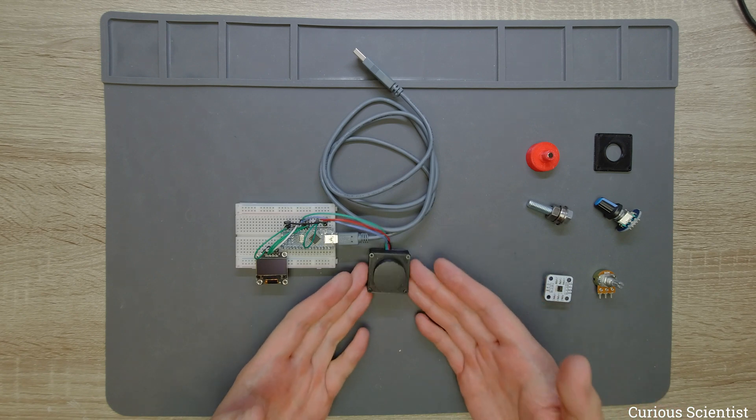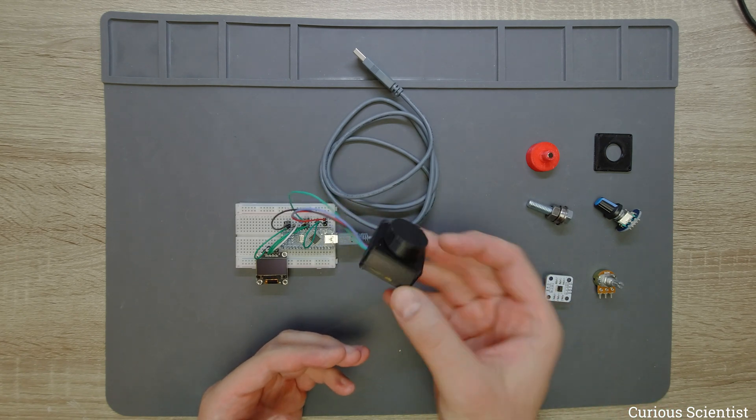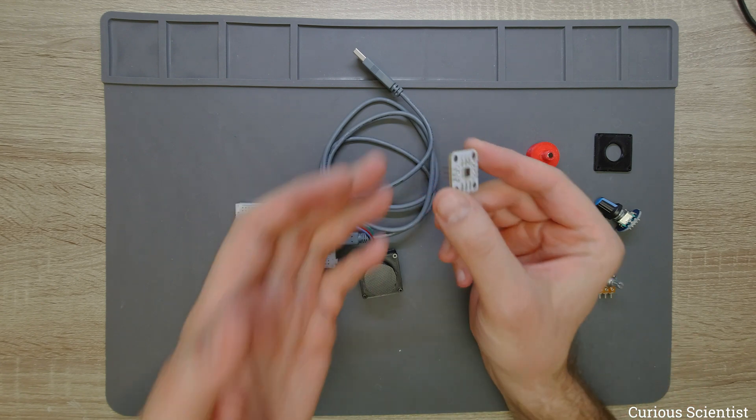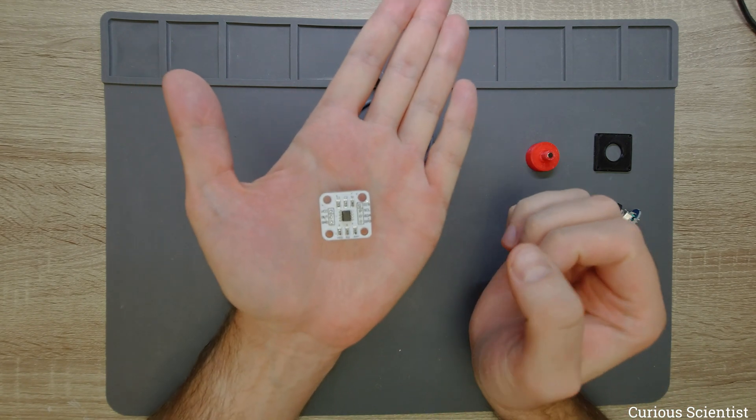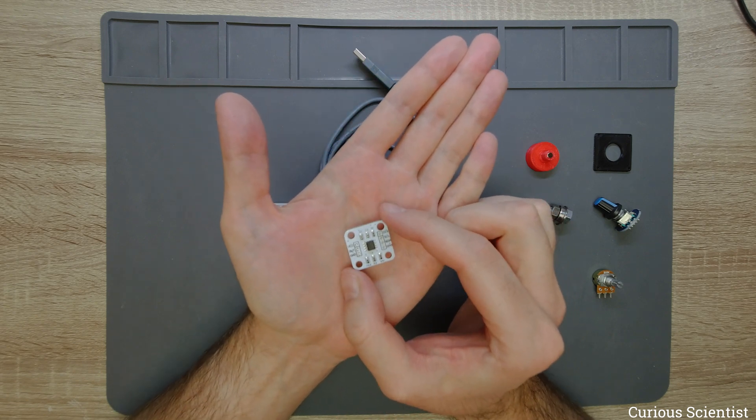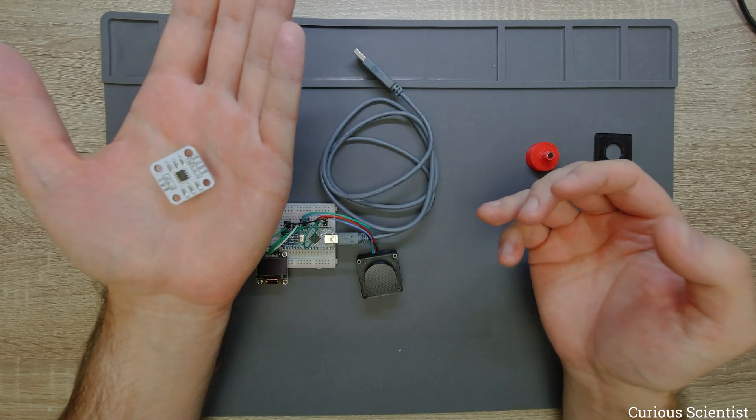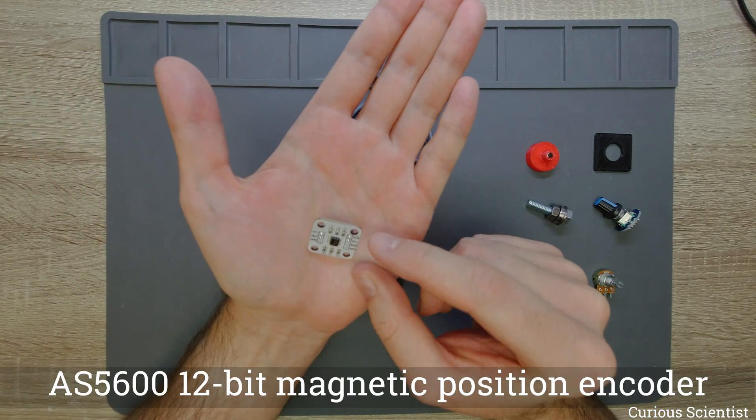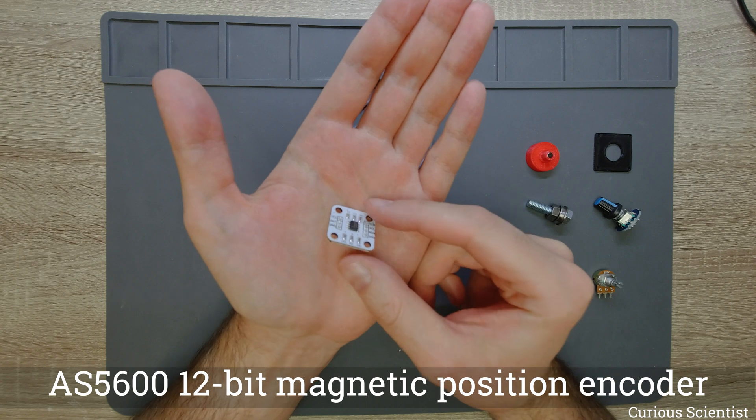The subject of this video is contained in this small box, and you might be already familiar with this circuit because I have already shown this in some of my videos. The basic circuit, which is the most important thing in this project, is this AS5600 magnetic encoder.